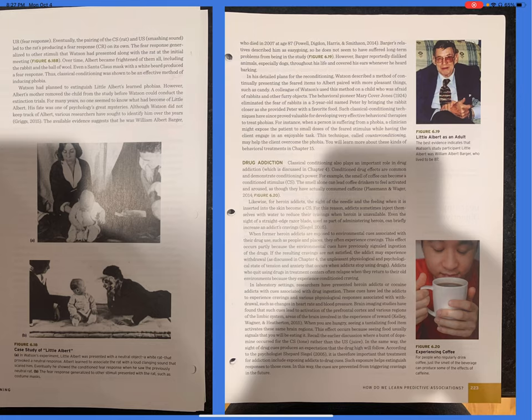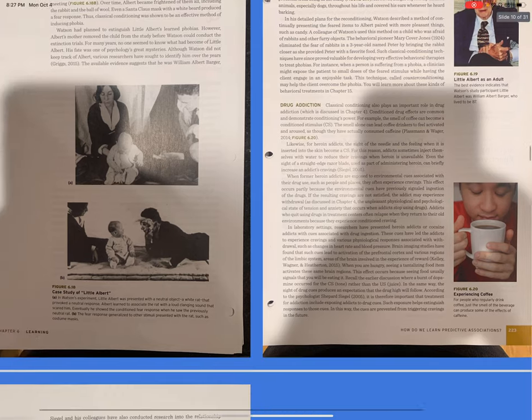When you are hungry, seeing a tantalizing food item activates these same brain regions. This effect occurs because seeing food usually signals that you will be eating it. Recall the earlier discussion where a burst of dopamine occurred for the conditioned stimulus, the tone, rather than the unconditioned stimulus, the juice. In the same way, the sight of drug cues produces an expectation that the drug high will follow. According to psychologist Shepard Siegel, it is therefore important that treatment for addiction include exposing addicts to drug cues. Such exposure helps extinguish responses to those cues. In this way, the cues are prevented from triggering cravings in the future.